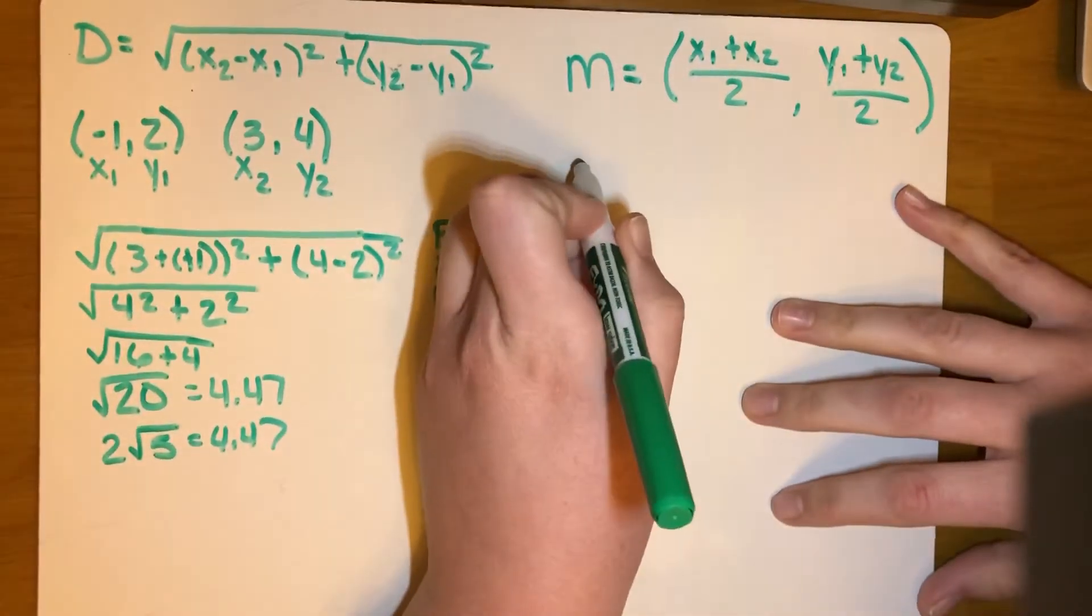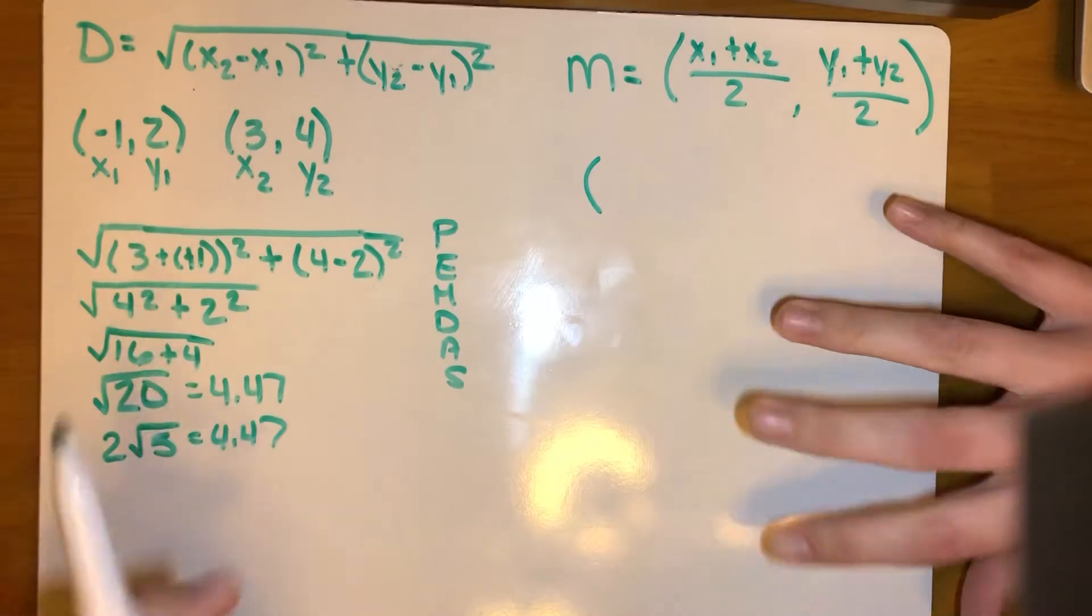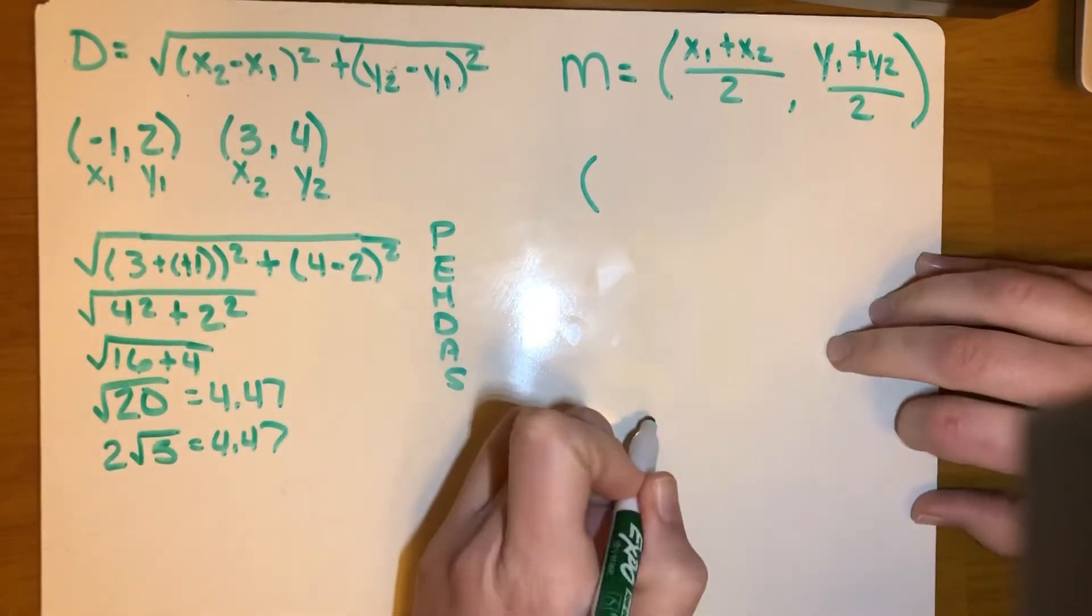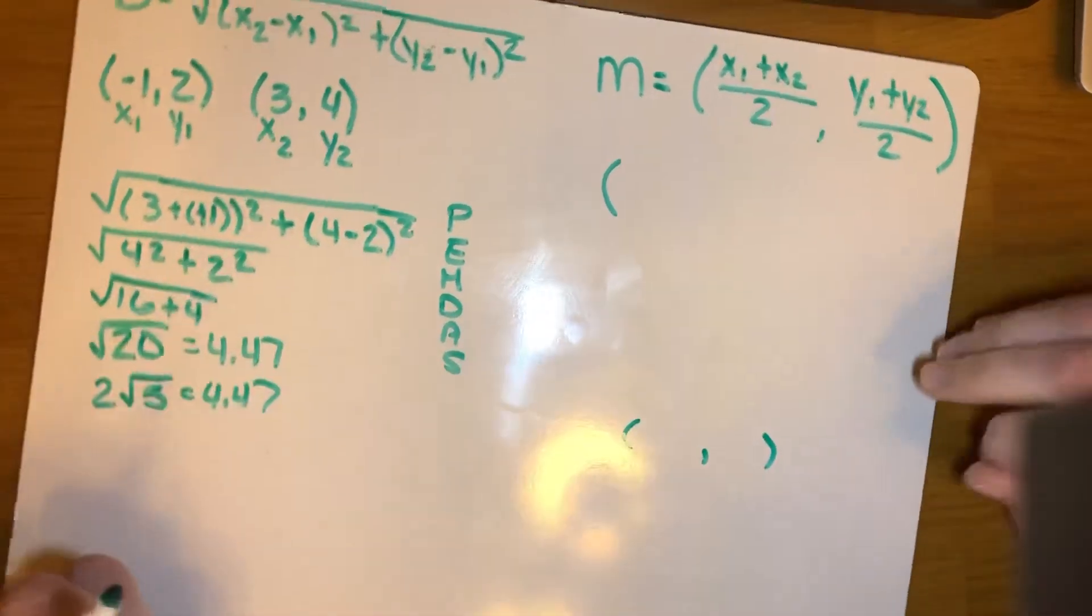So remember that a midpoint is a point on the graph, so when you finish it up, it should be a coordinate, so an x y.